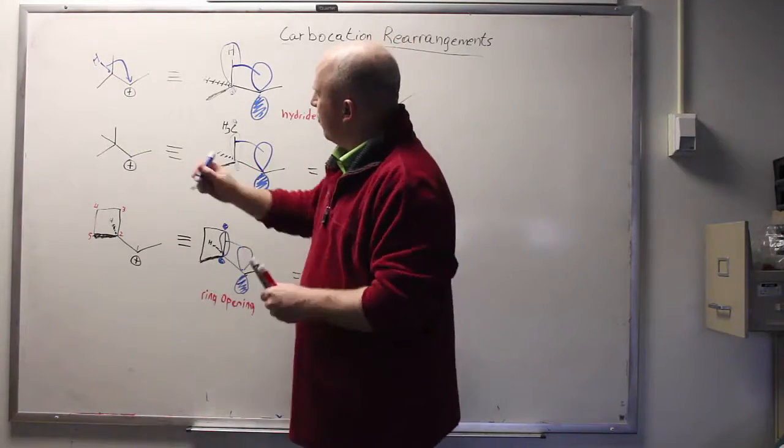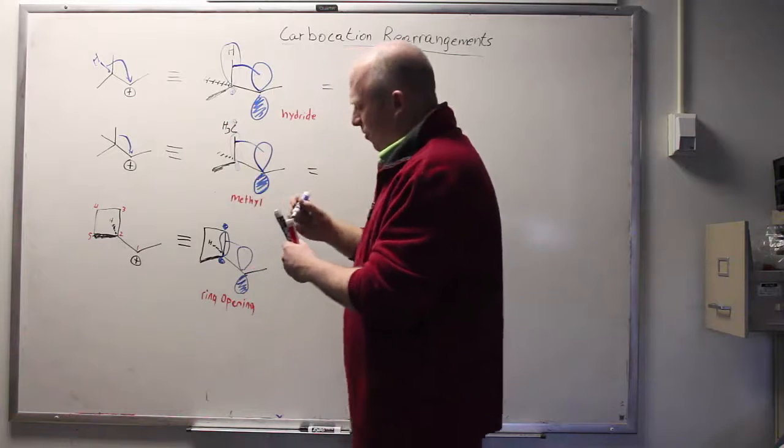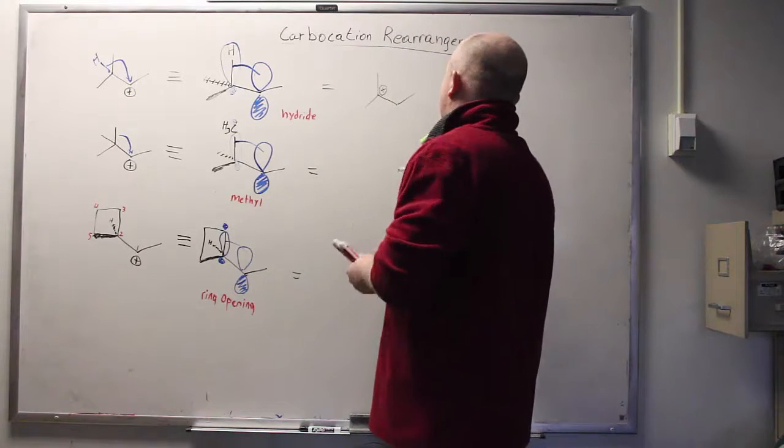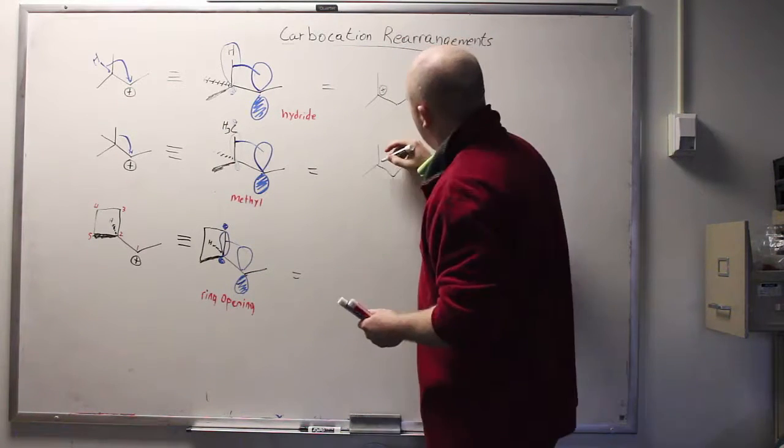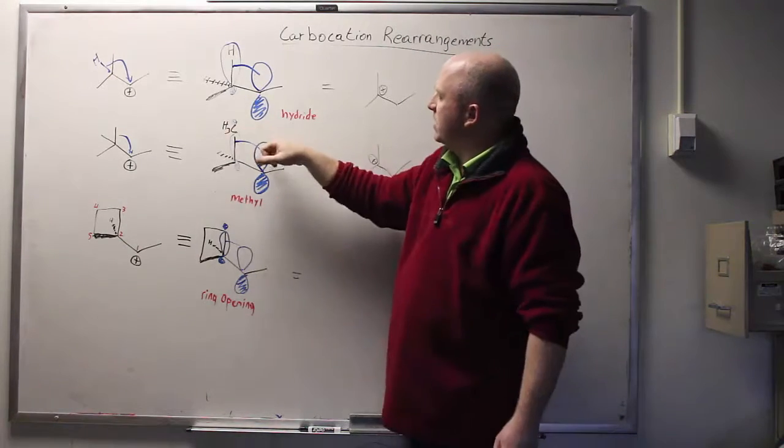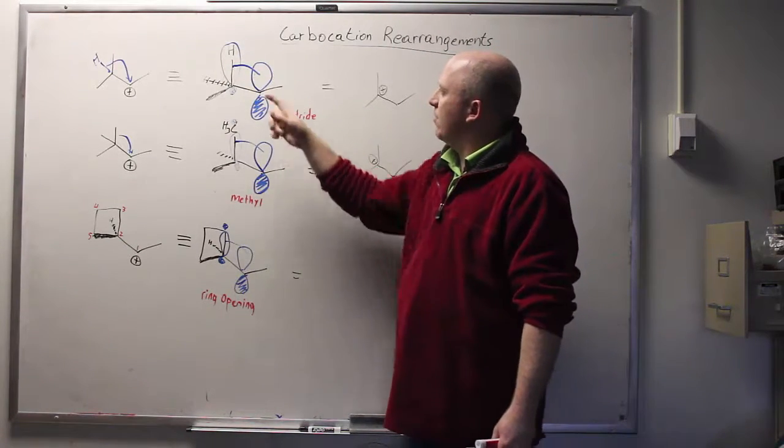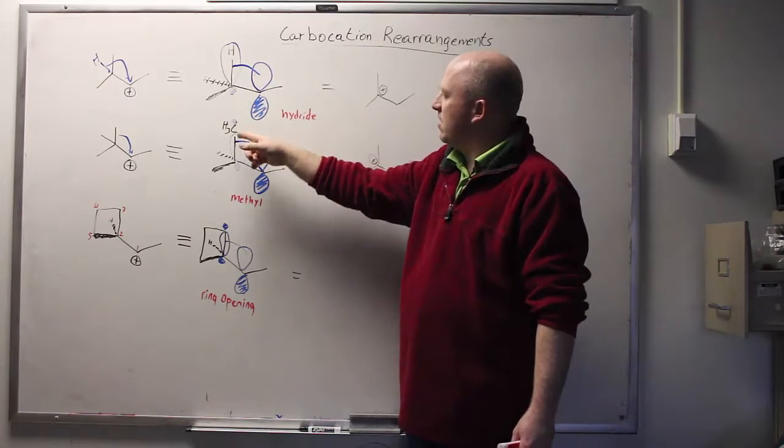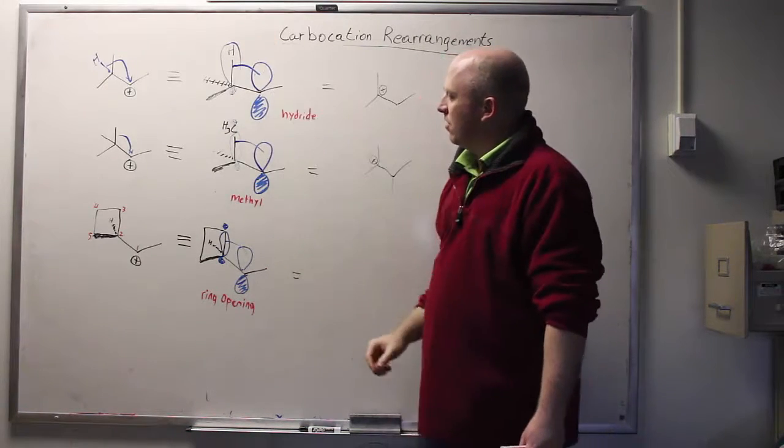Same idea here. If the methyl group slides over, then you end up forming a tertiary system. A slightly different scenario, but fundamentally the same process. Methyl can slide over, hydrogen can slide over. The only reason is that the electrons are actually doing the sliding and the groups are just along for the ride.